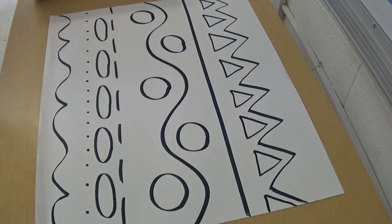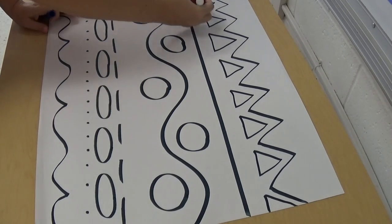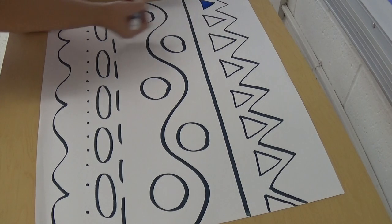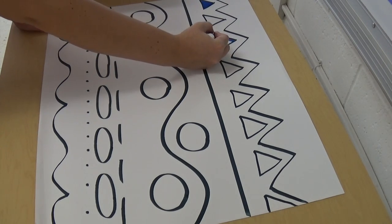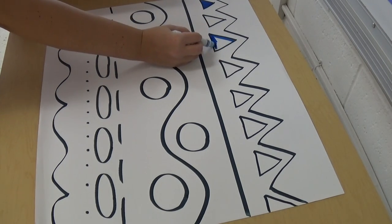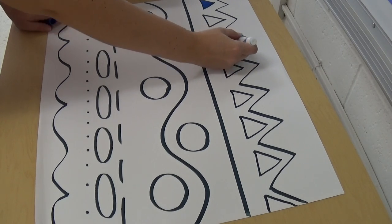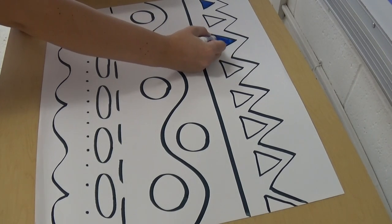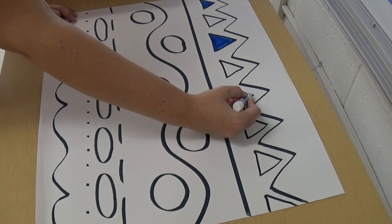So my friends, the next thing you get to do is you get to color your shapes. You can pick whatever color you want for your shapes. I'm going to color this one blue. Look how I'm taking my time and coloring inside those lines. And I'm going to make this one blue, and I'm going to make this one blue.